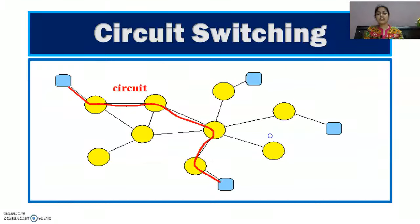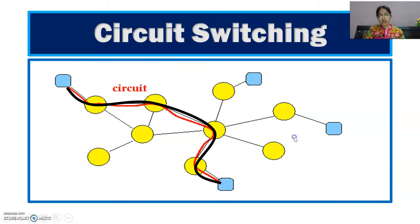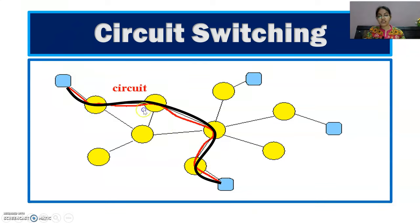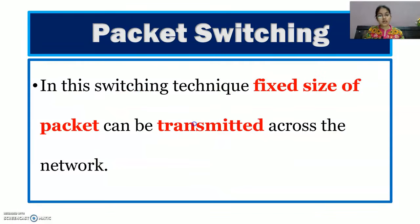In the circuit switching example, to transfer data from one computer to another, we do this in three steps: first, establish the end-to-end path or connection between the two. Then data transfer occurs. After data transfer is complete, that path is removed.